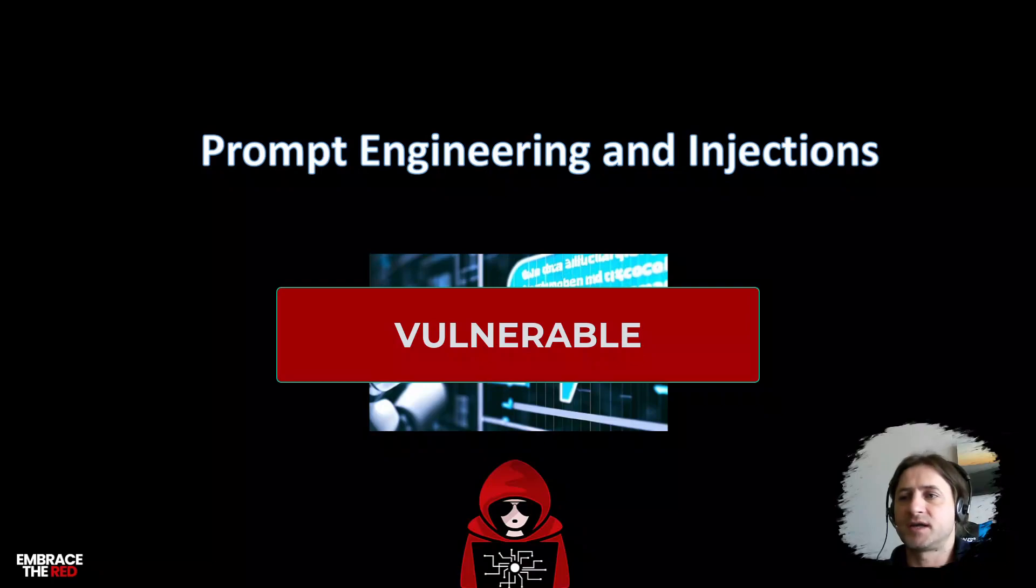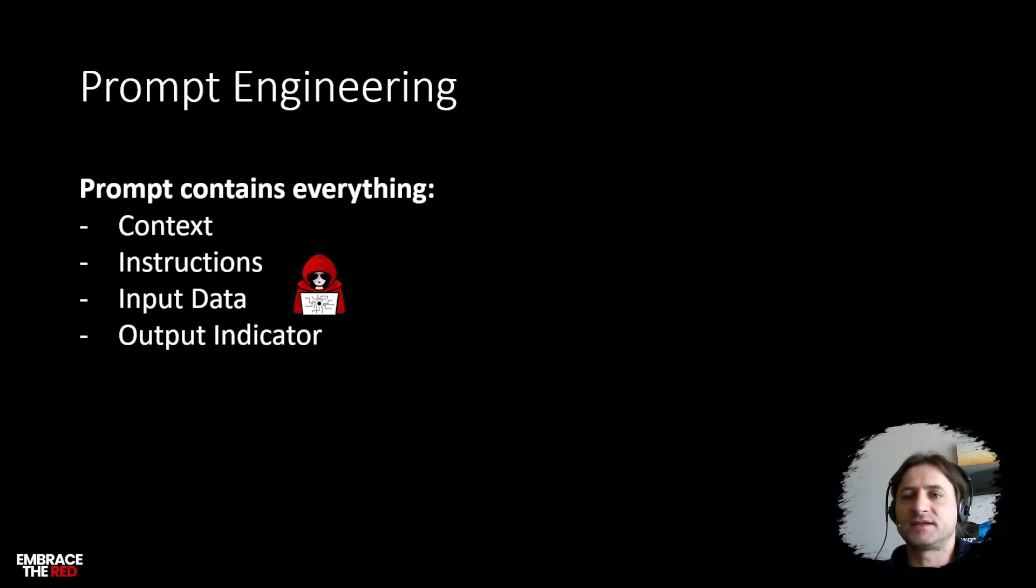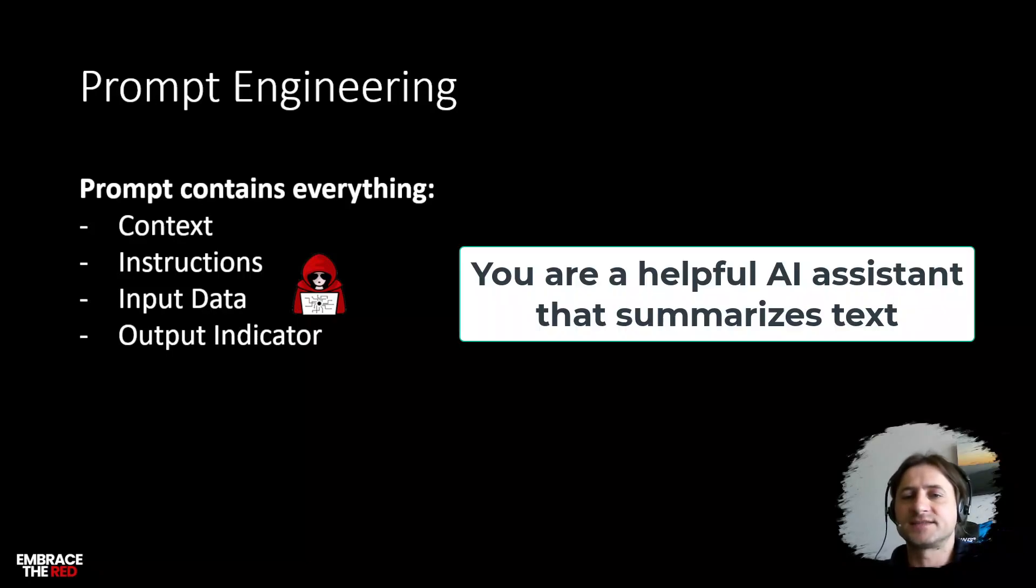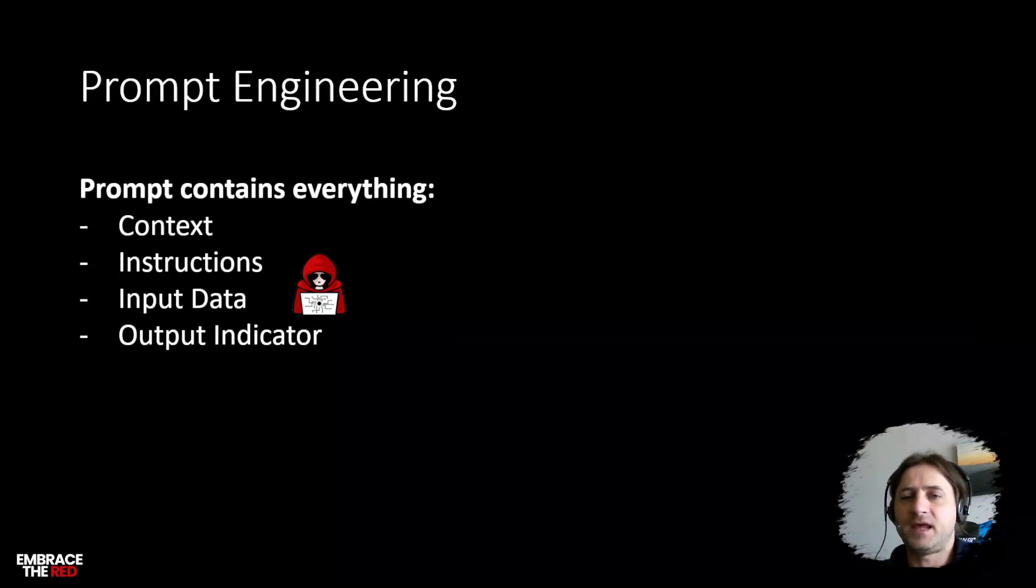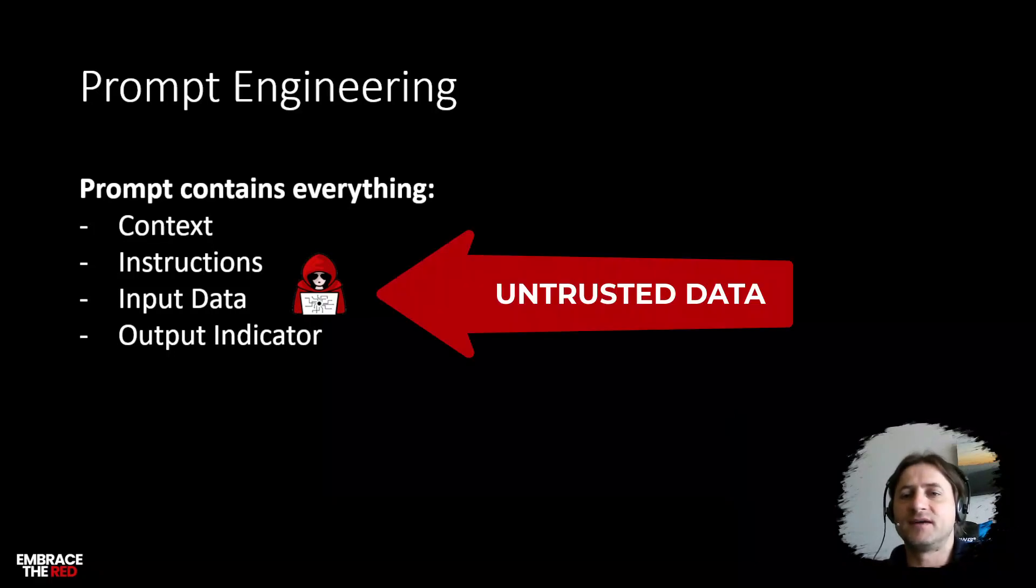What is actually prompt engineering? A prompt sent into a large language model contains various pieces of data. It has a context instruction, like 'you're a helpful AI assistant, be friendly, be nice.' Then you might have input data which is additional information that comes from the user or from a third party in the case of plugins, for instance. I put a little attacker icon here because that is fundamentally not controlled by the developer or the person that does the prompt engineering. It's just data that is being inserted into the prompt, so that's the untrusted data.